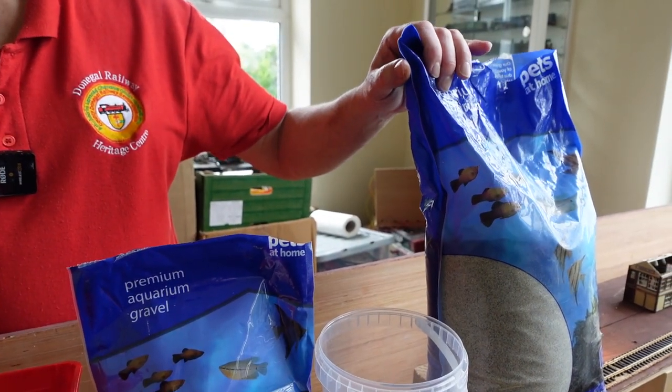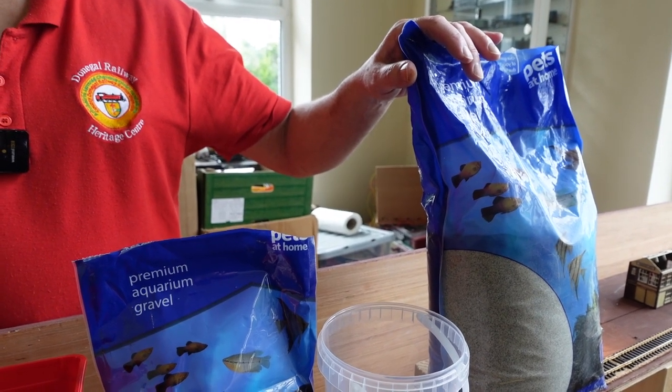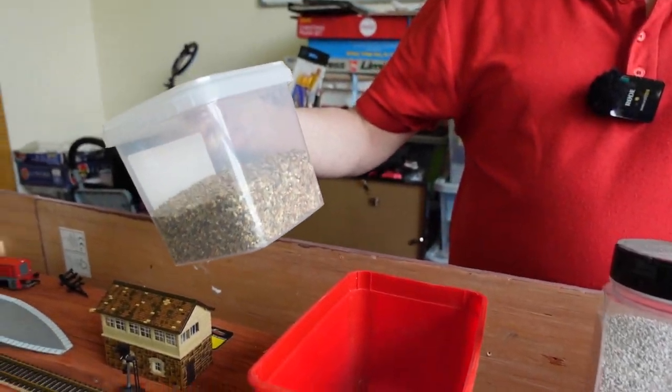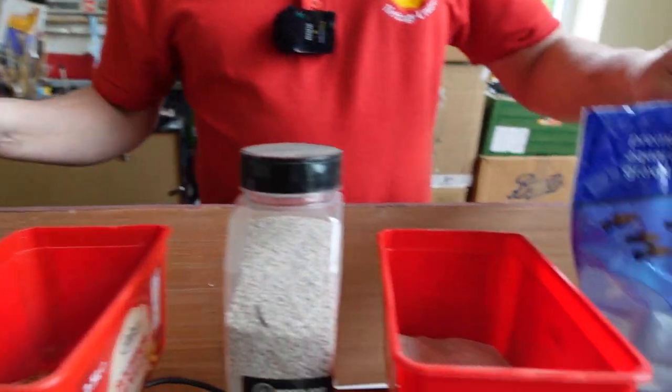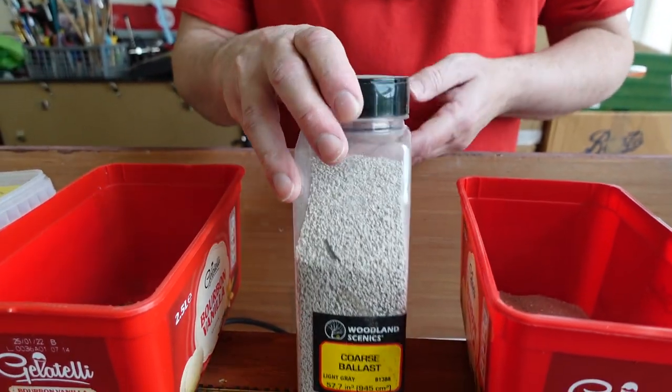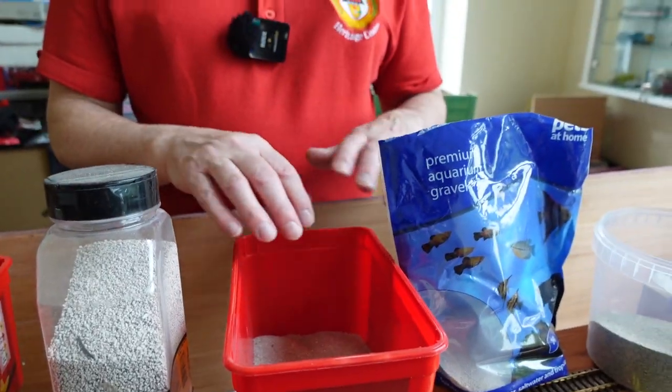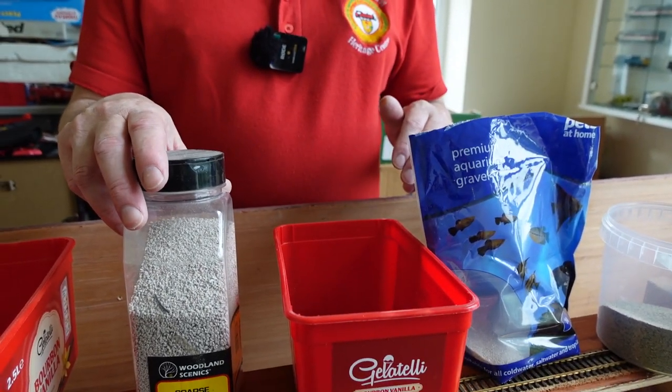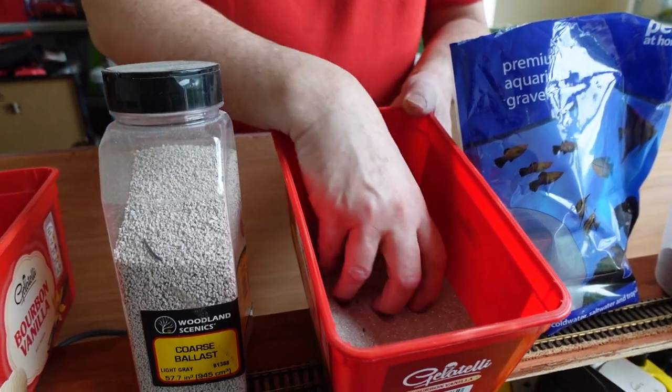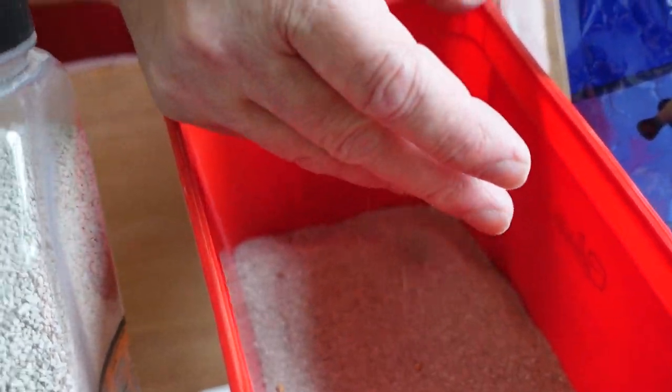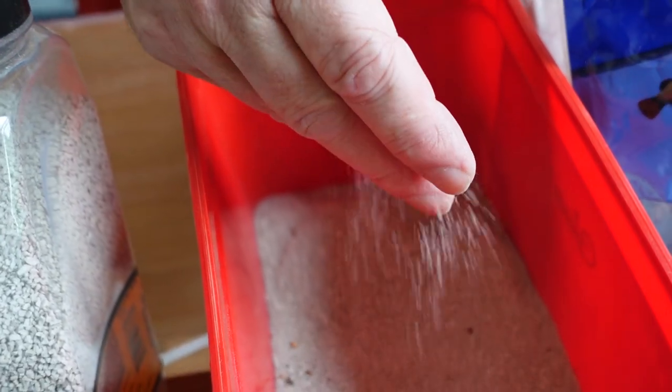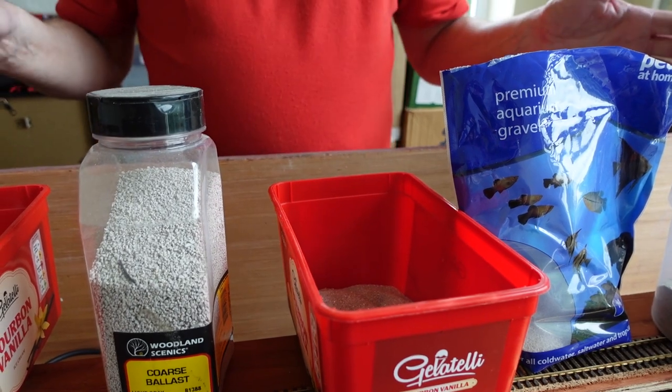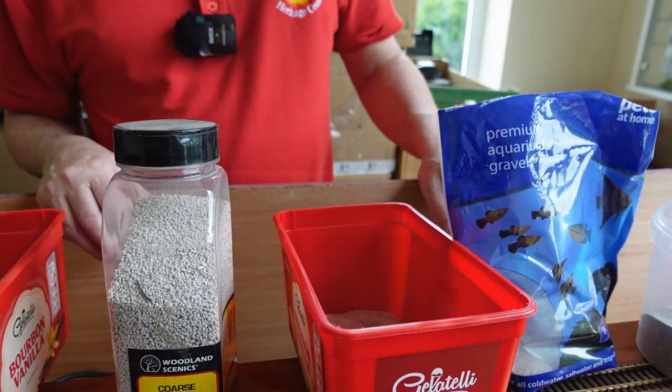The great thing about aquarium gravel is you can get a big bag like this for around eight quid in the pet shop. Likewise with the bird grit, that was a couple of quid. Smaller bags are a lot cheaper than this. Really with the ballast, if you're going to weather it afterwards, you're not going to see the color. I tend to just use this stuff because it's about the right size scale-wise, it's cheap, it works the same way, and it will glue in place with PVA. So there's just some of the things I use for ballasting. Now we'll get on and do the ballasting.